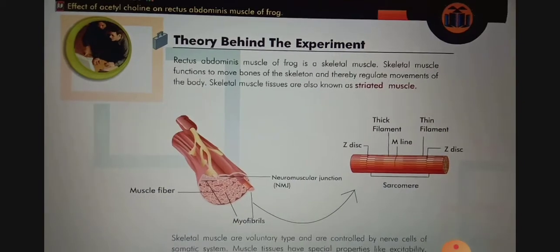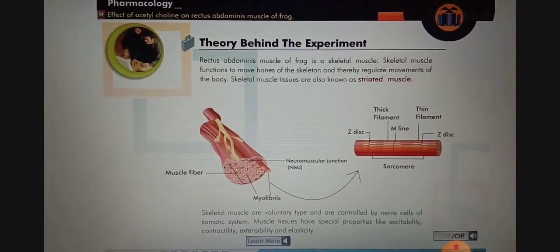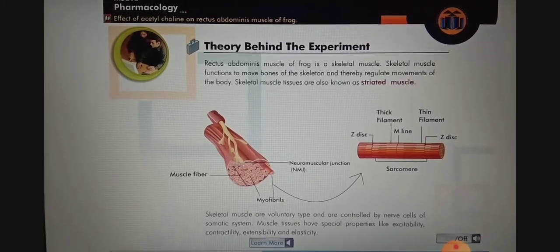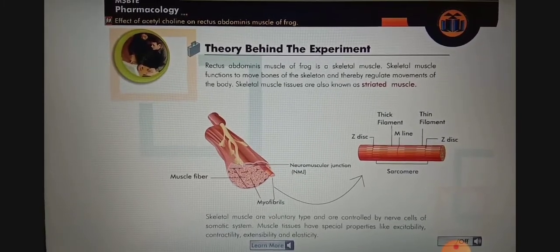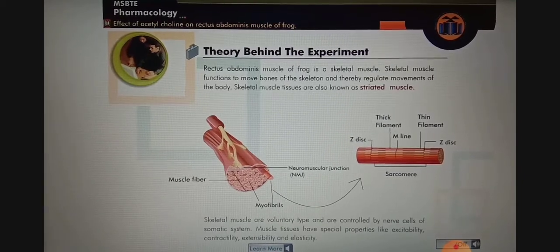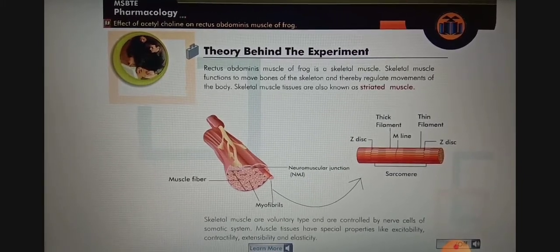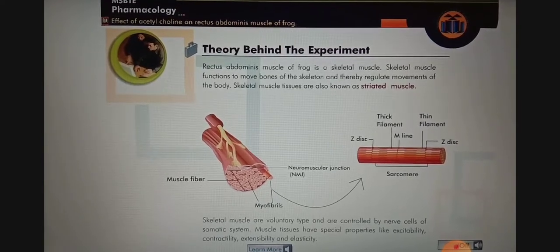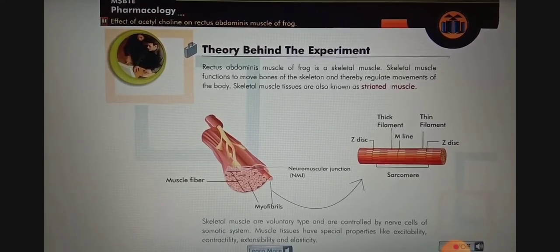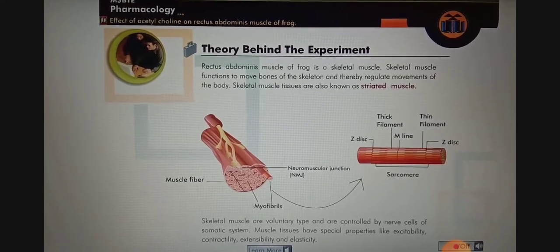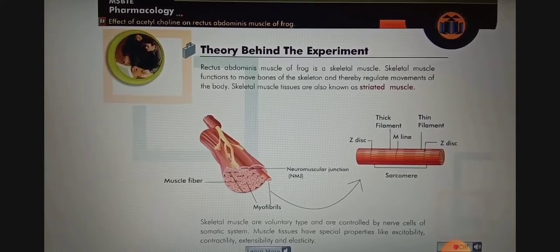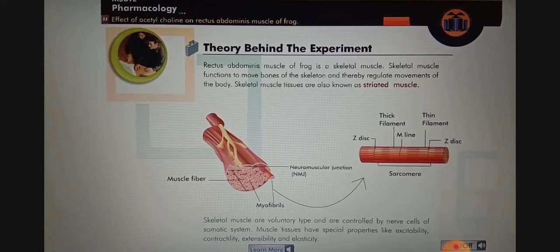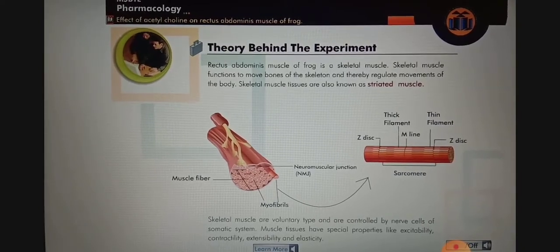Rectus abdominis muscle of frog is a skeletal muscle. Skeletal muscle functions to move bones of the skeleton and thereby regulate movements of the body. Skeletal muscle tissues are also known as striated muscle. Skeletal muscles are voluntary type and are controlled by nerve cells of the somatic system. Skeletal muscle tissues have special properties like excitability, contractility, extensibility, and elasticity.